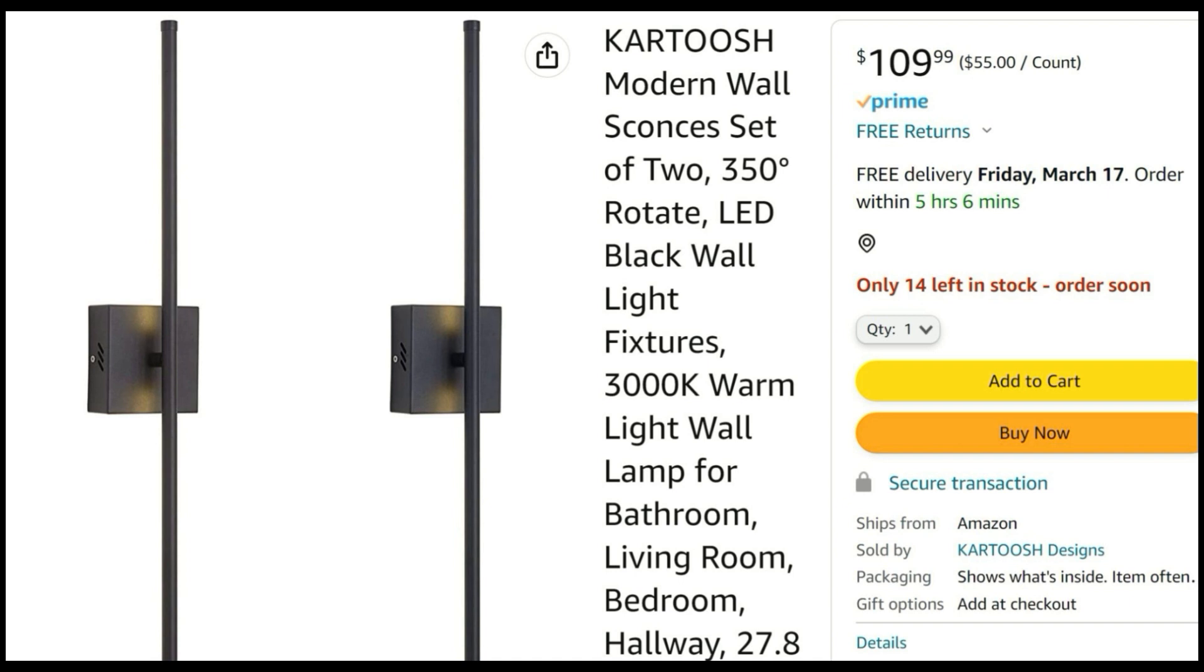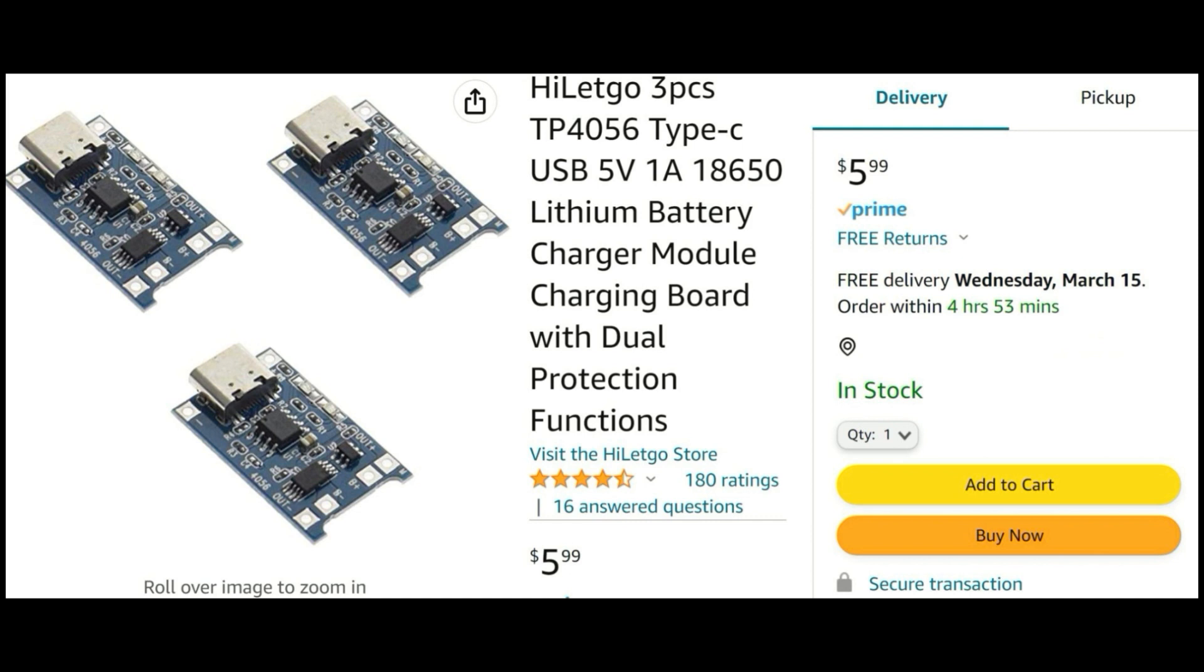Here is the charge control module - you get three pieces for six dollars on Amazon. This is what controls how much electricity goes into the rechargeable battery and when to stop charging it to prevent it from overcharging causing a fire. I'll get into more details and the wiring up of this thing later on in this video.